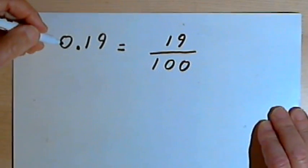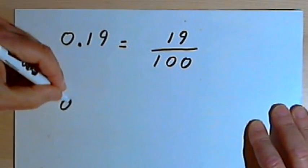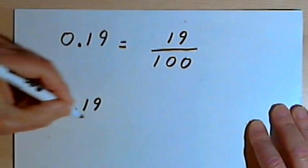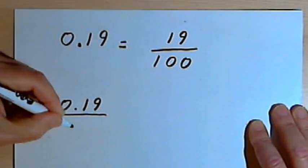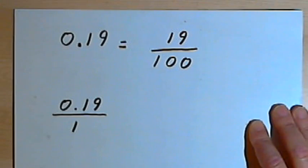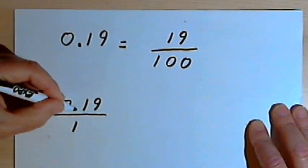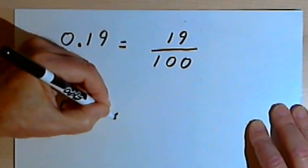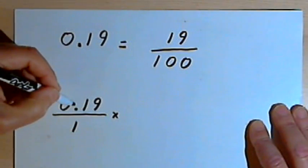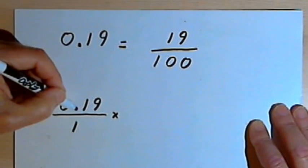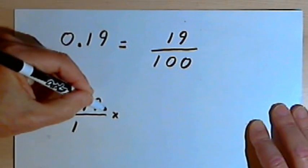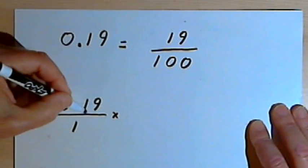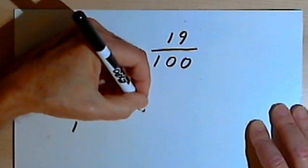Now here's another way to think of this. I could take that decimal number again, 0.19, and I could make it a fraction by using 1 as a denominator. But I wouldn't want to leave a decimal point in a fraction. I could get rid of the decimal point in the numerator by multiplying the numerator by 100. That would move the decimal point two places to the right, and I would just have 19.